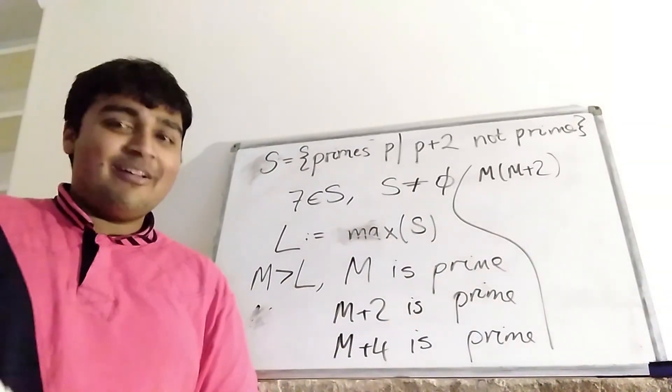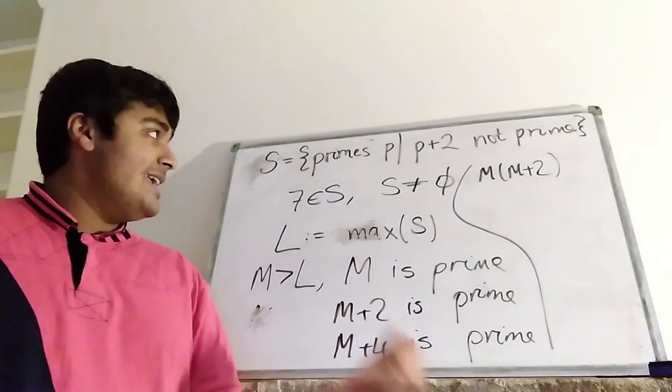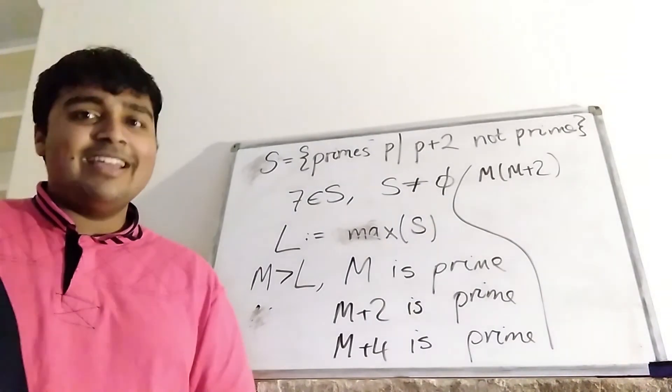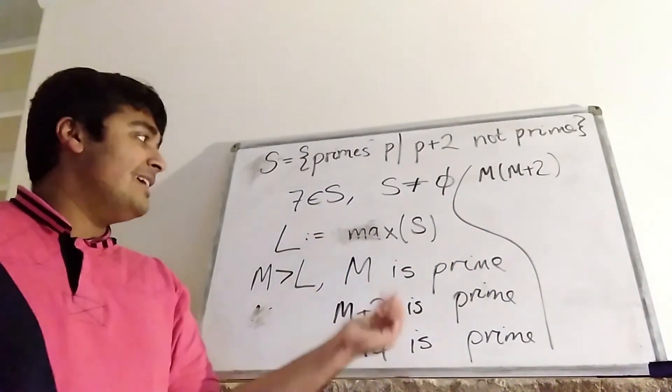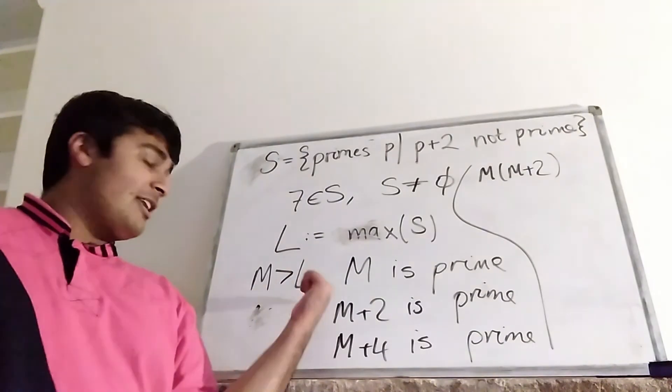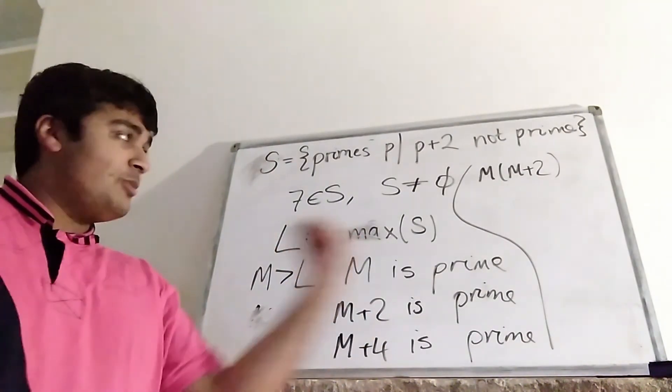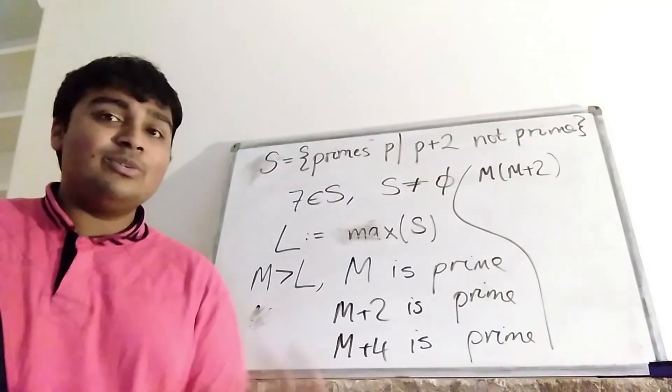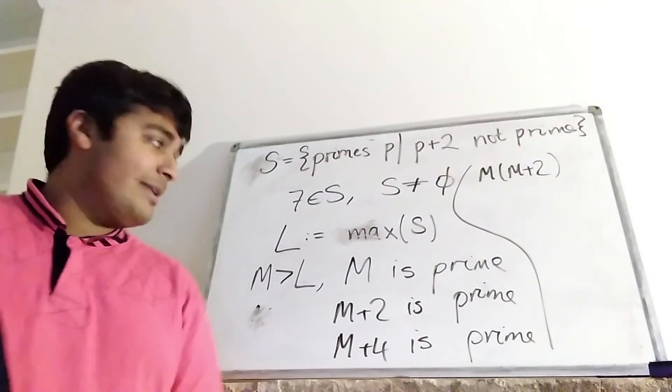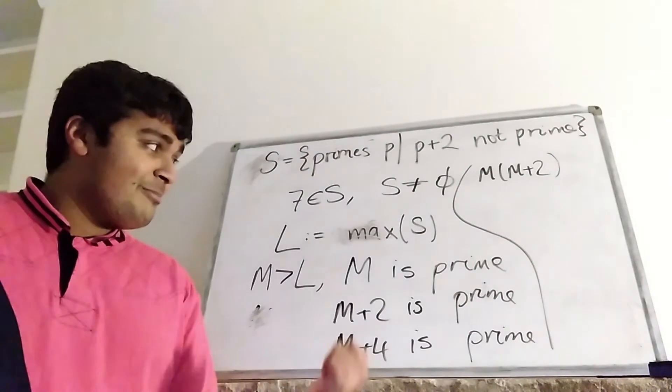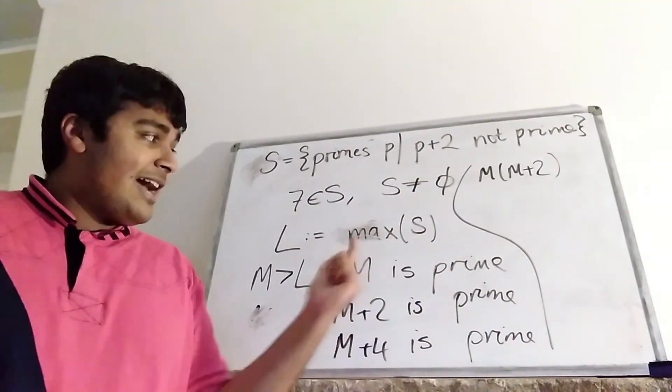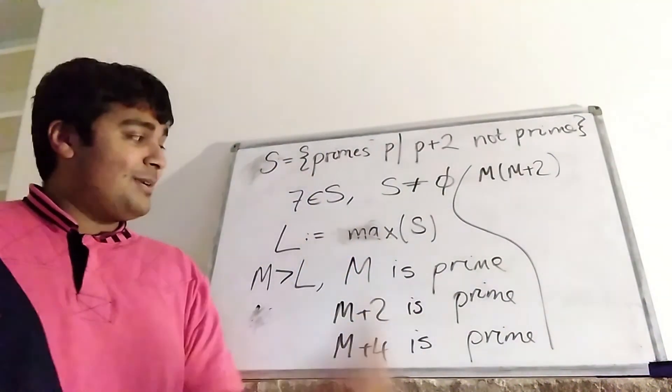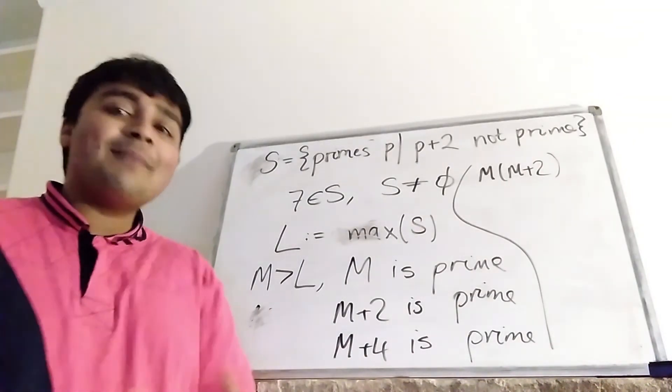So we're done. So we've shown that there are infinitely many primes p, such that p plus 2 is not prime, because for the contrary, if there are finitely many, then we can get this sort of argument here. There'd be a largest element, L, which is prime with L plus 2 not prime. Then choose M to be a prime number bigger than L, which certainly exists, because there are infinitely many primes. And then M is prime by construction, and using, because M is not in S, M plus 2 is prime, then M plus 4 is prime, and so on.